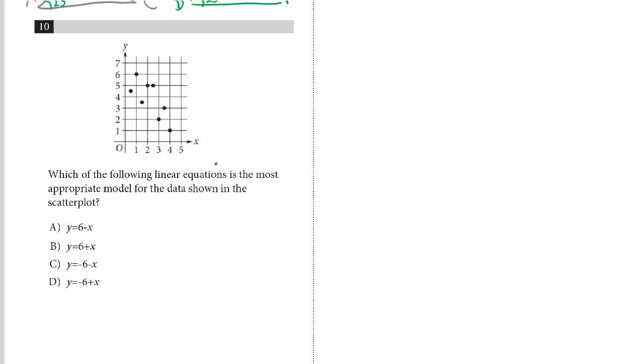Number 10. Which of the following linear equations is the most appropriate model for the data shown in the scatter plot? The data looks like it's going to be something like that. It's going to be a negative slope. It's down to the right.